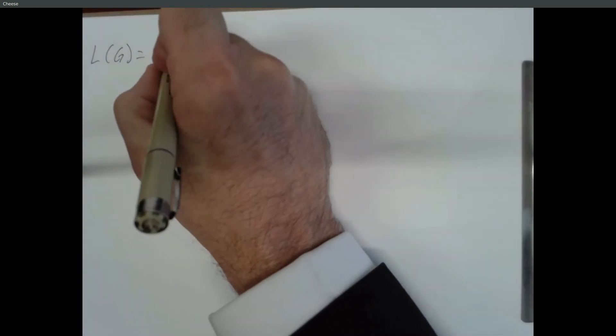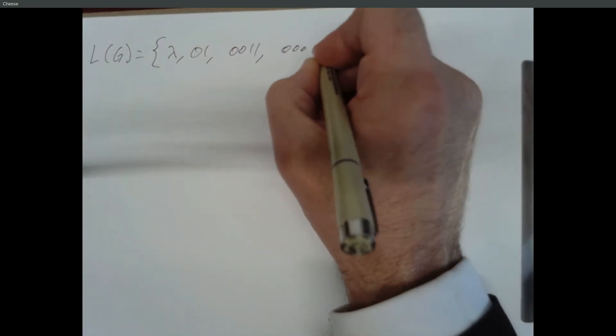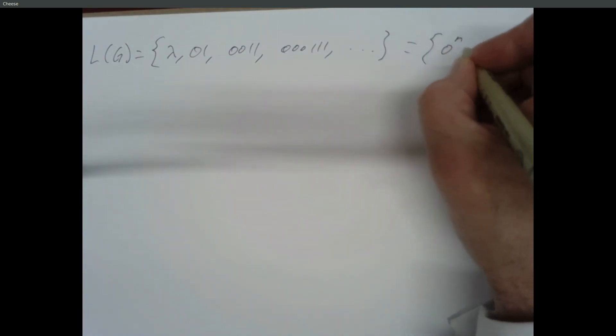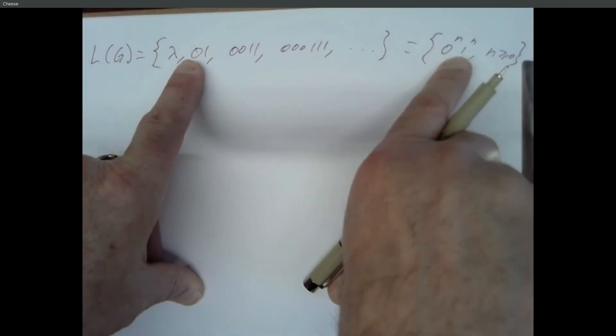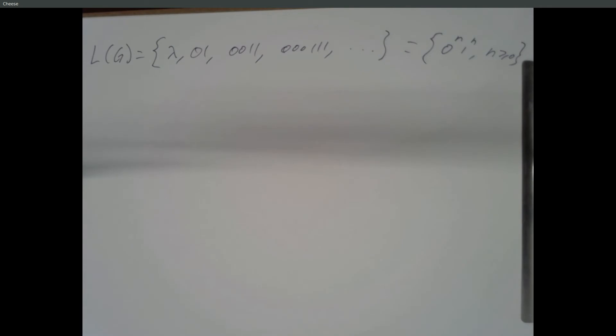This is all leading up to the idea of synthesis. Suppose we want to create a phrase structure grammar that describes certain strings. The language should include lambda (the empty string), 0,1; 0,0,1,1; three zeros followed by three ones, and so on. This looks like 0^n 1^n where n ≥ 0. If n is zero, that's the empty string. If n is one, it's a zero followed by a one. I want to recognize any number of zeros followed by the same number of ones.